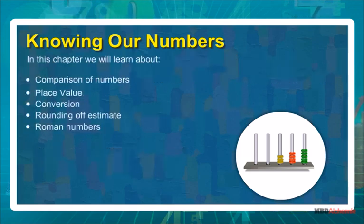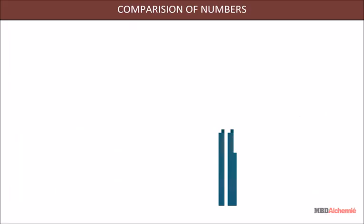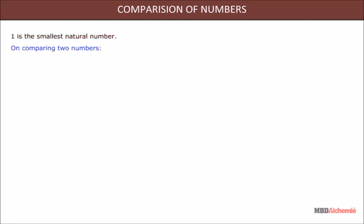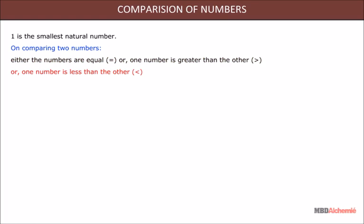In this chapter, we will learn about comparison of numbers, place value, conversion, rounding off and estimate, and Roman numbers. Comparison of numbers: 1 is the smallest natural number. On comparing two numbers, either the numbers are equal, or one number is greater than the other, or one number is less than the other.